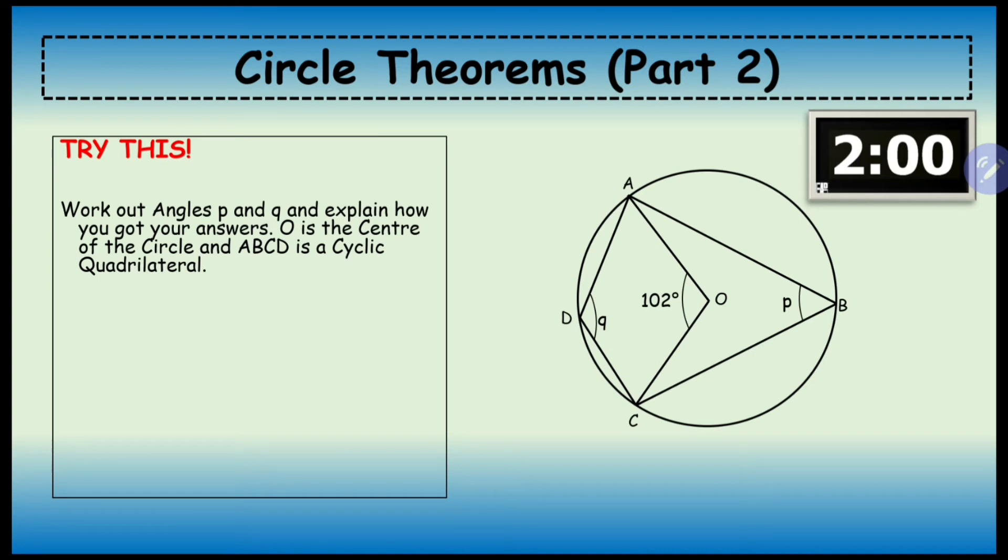Okay, let's have a look at this one. We're going to use the second rule - the angle at the center is twice the angle at the circumference. Work out the angles p and q. First we're going to find p. Here is the angle 102 degrees, and that should be double the angle at the circumference, so p should be half of that, which is 51.